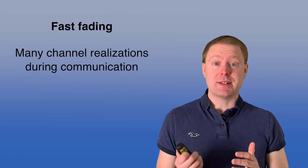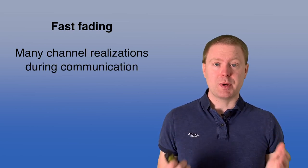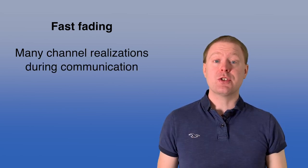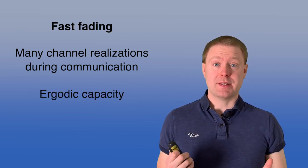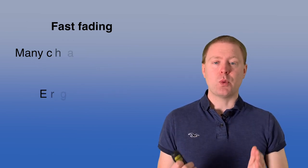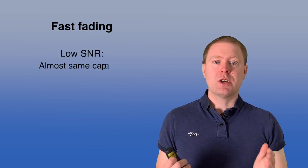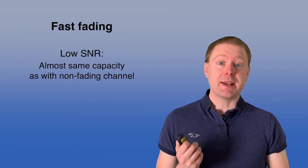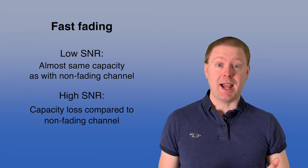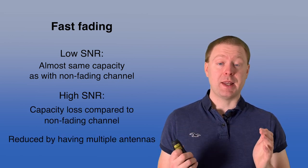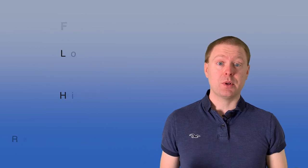In summary, in the fast fading setup where we get many channel realizations during our communication, we can define a capacity which is non-zero — called the ergodic capacity — which contains the expectation with respect to the random channel. At low SNR there is not much difference from a corresponding non-fading case, but at high SNR there is a gap. That gap can be reduced by having multiple antennas at the receiver side.